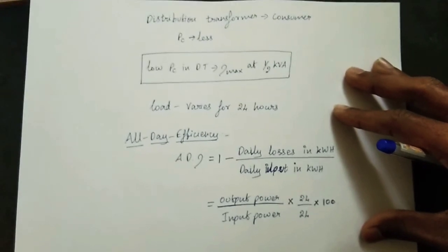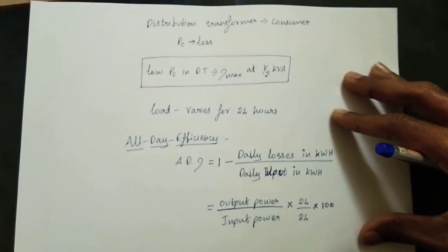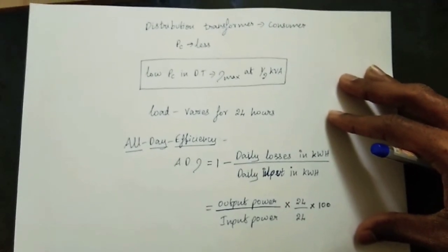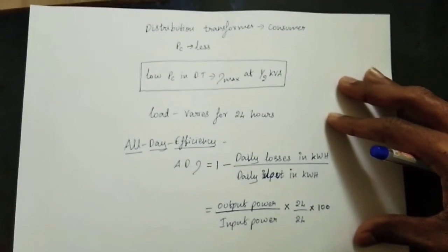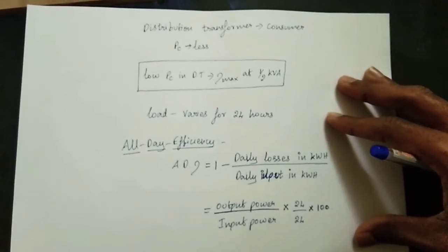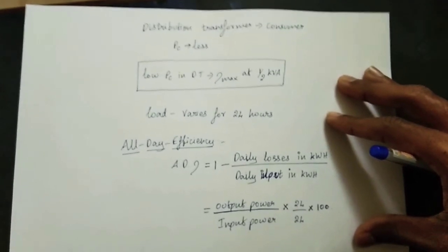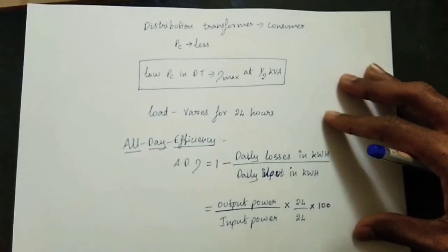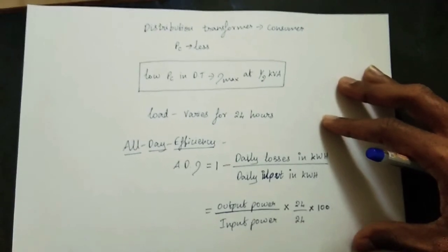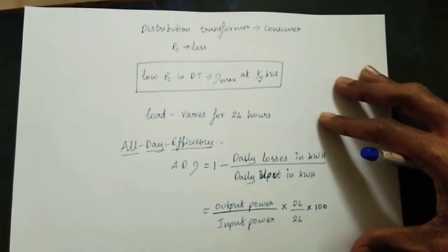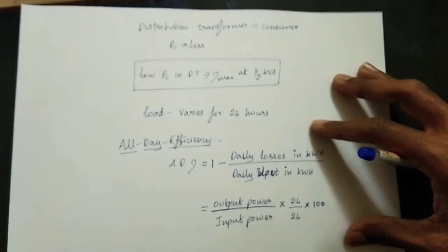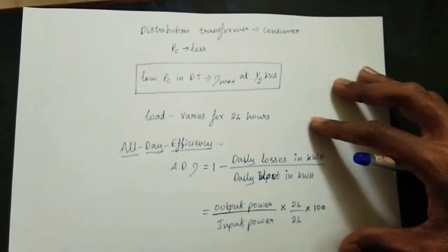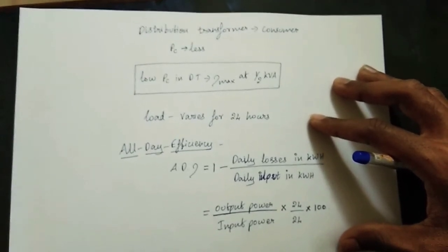All-day efficiency is an important concept for distribution transformers. It relates to how the transformer handles varying loads throughout the day, since distribution transformers serve consumers whose loads change over time.